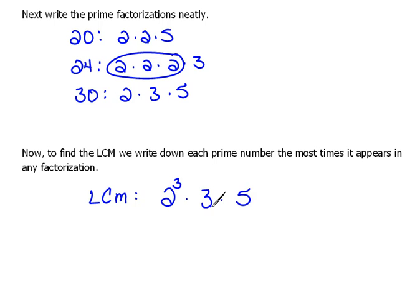Now next we move to our 3s. In our first prime factorization we have no 3s. Here we have 1, and here we have 1. So the most times it appears in any factorization is only one time. So that would be 3 to the first.